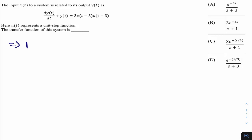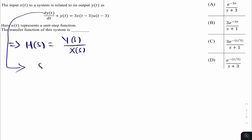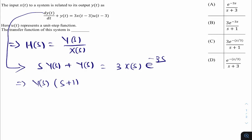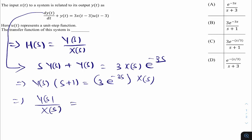Applying the Laplace transform to the equation gives s·Y(s) + Y(s) = 3·X(s)·e^(−3s), because the shifting property says if x(t) has Laplace X(s), then x(t − t₀) has Laplace e^(−s·t₀)·X(s). Taking Y(s) as common gives (s+1)·Y(s) = 3·e^(−3s)·X(s). Therefore Y(s)/X(s) = 3e^(−3s) / (s+1). This is the transfer function.